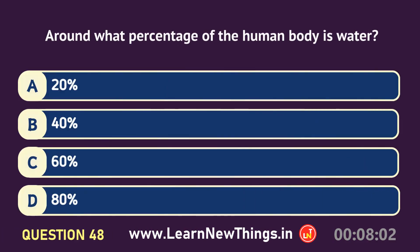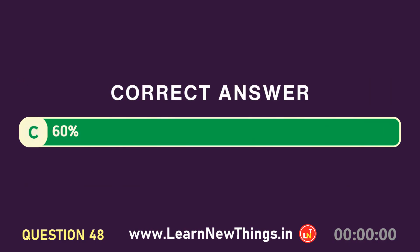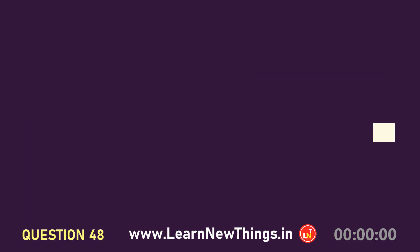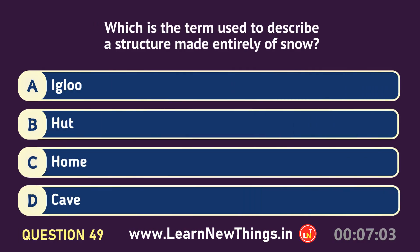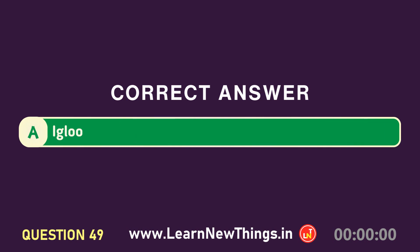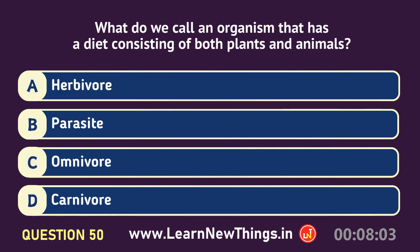Around what percentage of the human body is water? 60%. Which is the term used to describe a structure made entirely of snow? Igloo. What do we call an organism that has a diet consisting of both plants and animals? Omnivore.